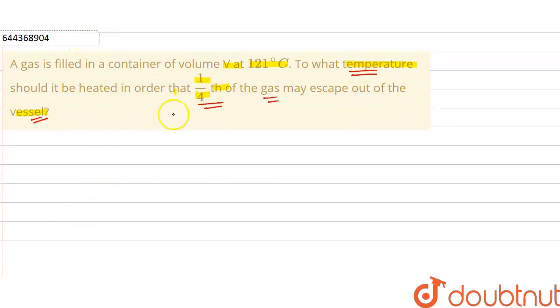We know that according to the ideal gas equation PV is equal to nRT where P is pressure, V is volume, n is number of moles, R is gas constant and T is temperature.